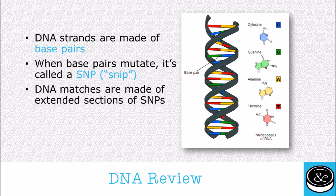To review, this is a DNA strand. These colors that you see in the middle — these colored rods — those are base pairs. Every genetic strand is made of this basic structure. You're going to have the base pairs in the middle, and the colors correspond to these nucleobases. DNA strands are made of these base pairs, and when these base pairs mutate, that is called a SNP. DNA matches are made of extended sections of these SNPs, of these mutations.